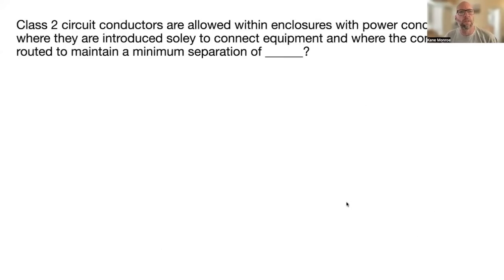Class 2 circuit conductors are allowed within an enclosure with power conductors only where they are introduced solely to connect equipment and where the conductors are routed to maintain a minimum separation of 1/4 inch. NEC 725.136(D).